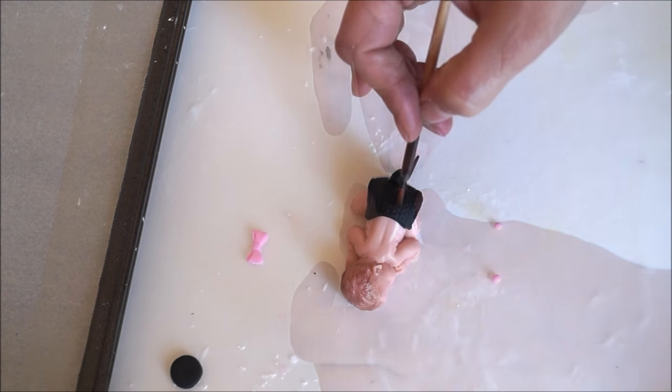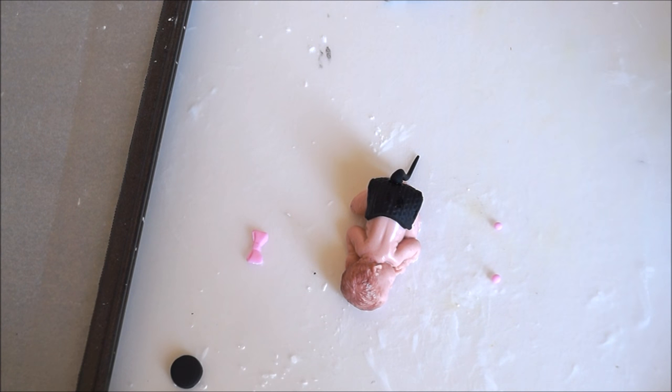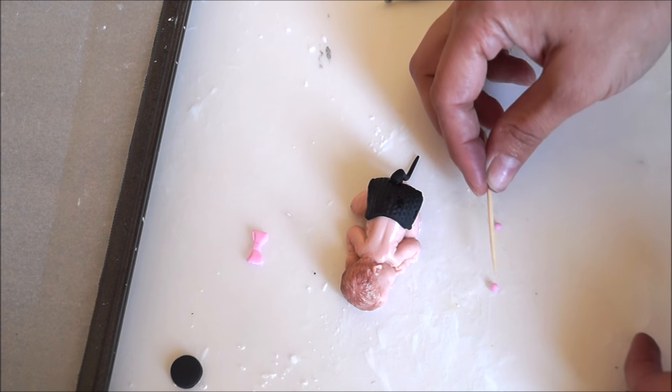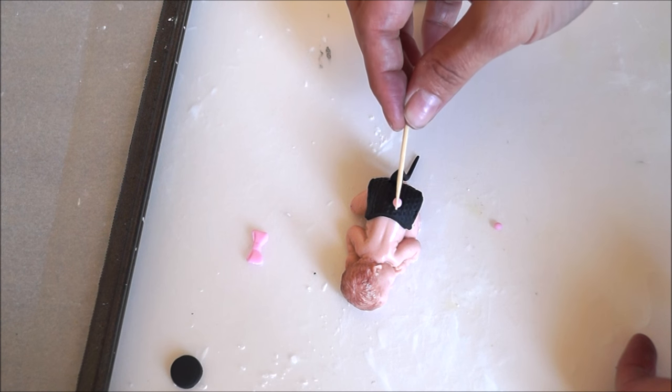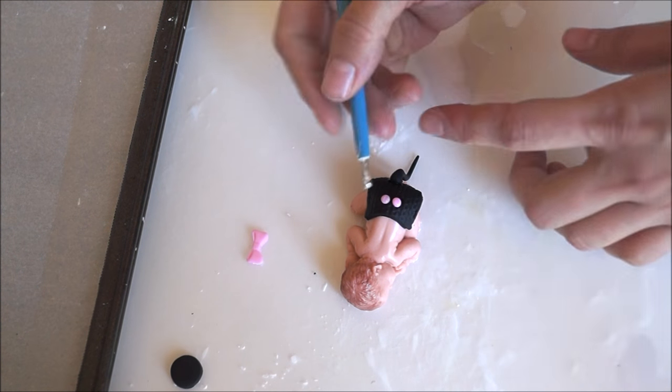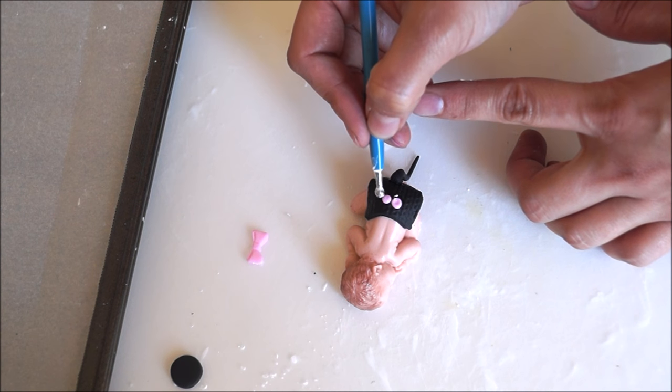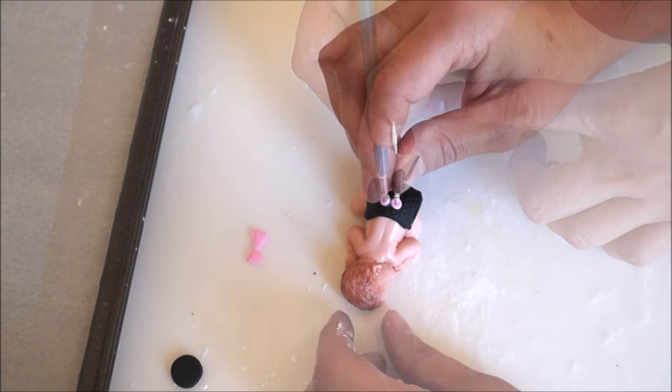To create little buttons, simply roll out two pieces of pink fondant and glue it at the top of the diaper. Flatten them out using your smallest ball tool and then simply create two creases using a toothpick.